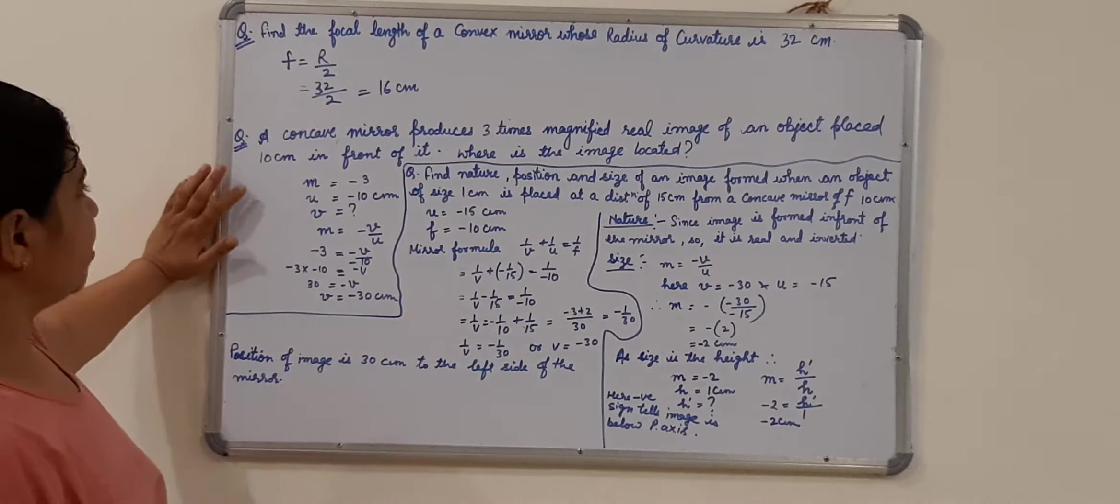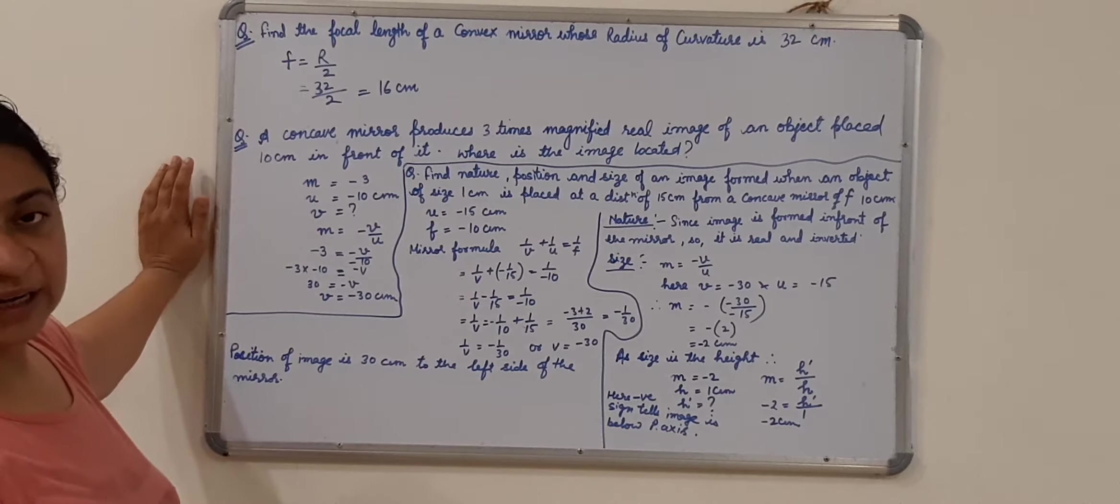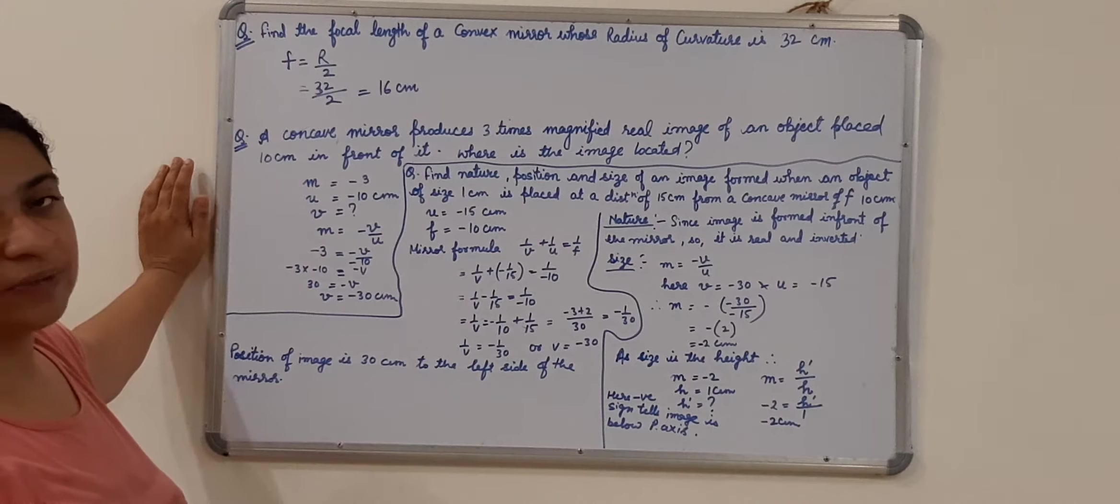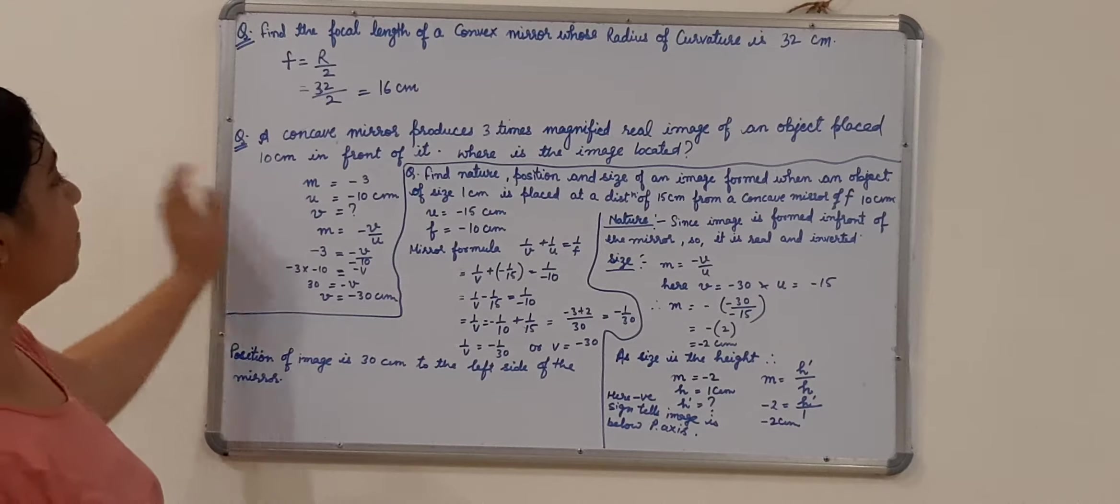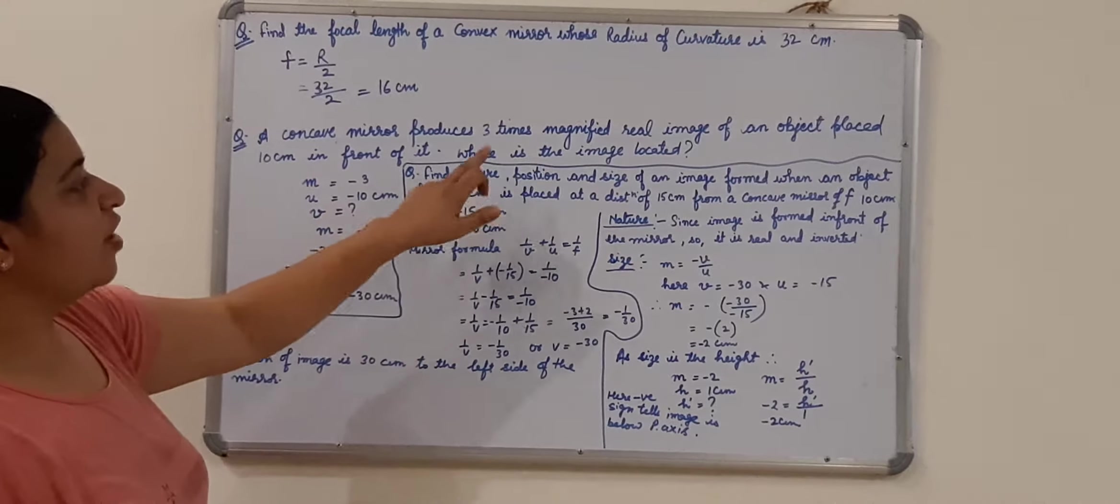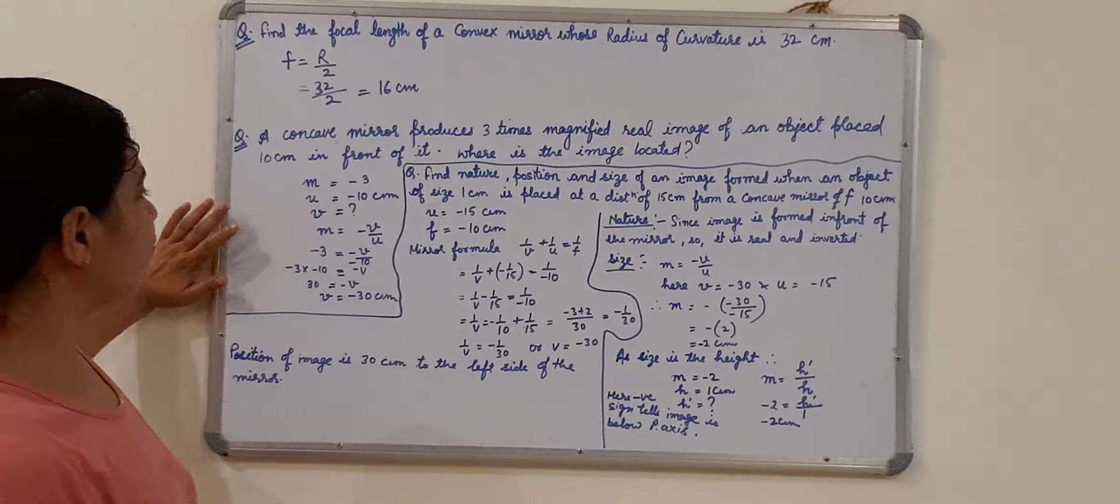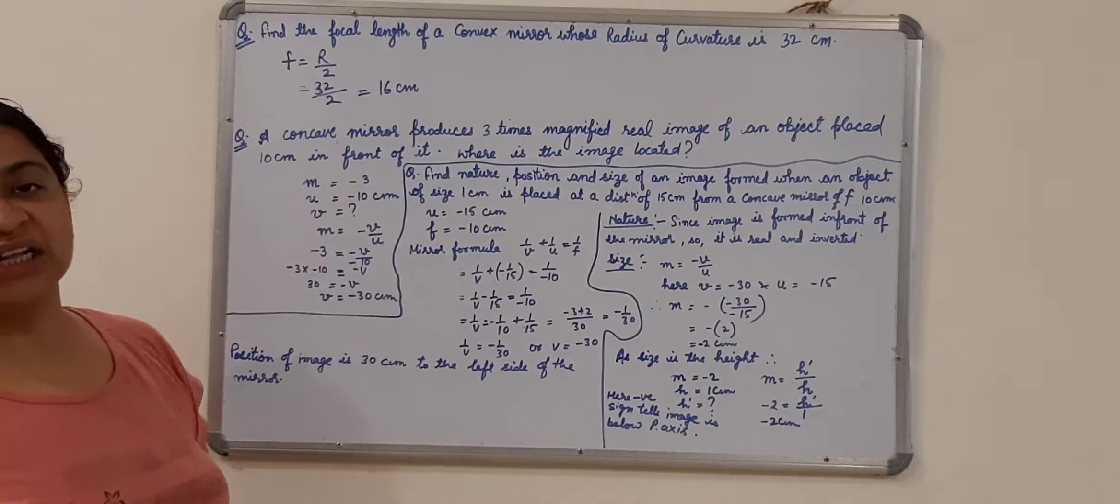Of an object placed 10 cm in front of it, it is the concave mirror. Object is always on the left hand side of the mirror or the lens, so object distance that is U will be minus 10 cm. Where is the image located? We need to find out the V. So we know the mirror, but here there is no focal length given.